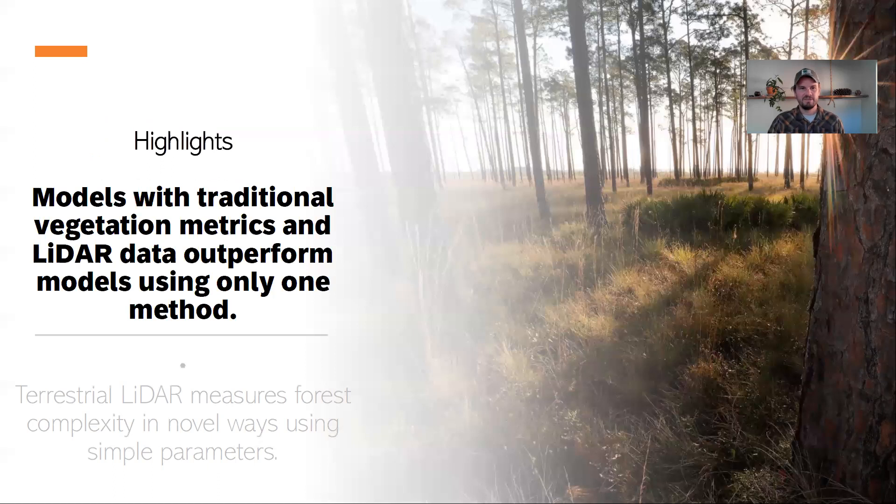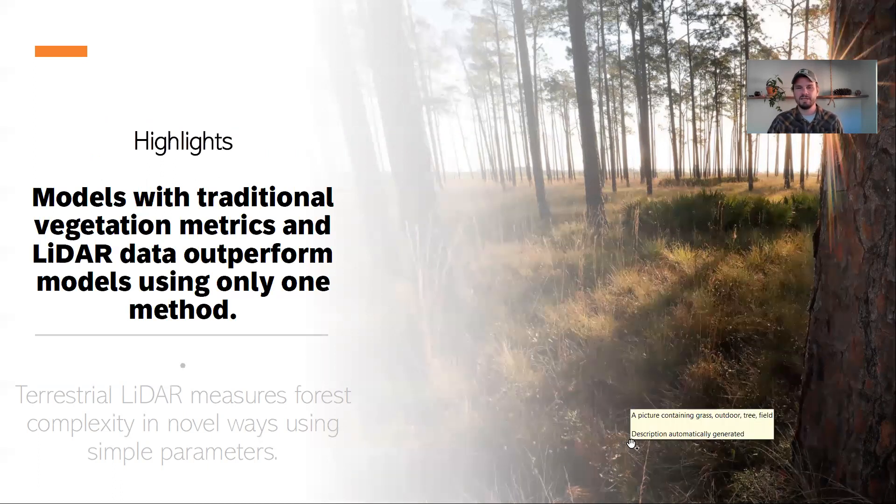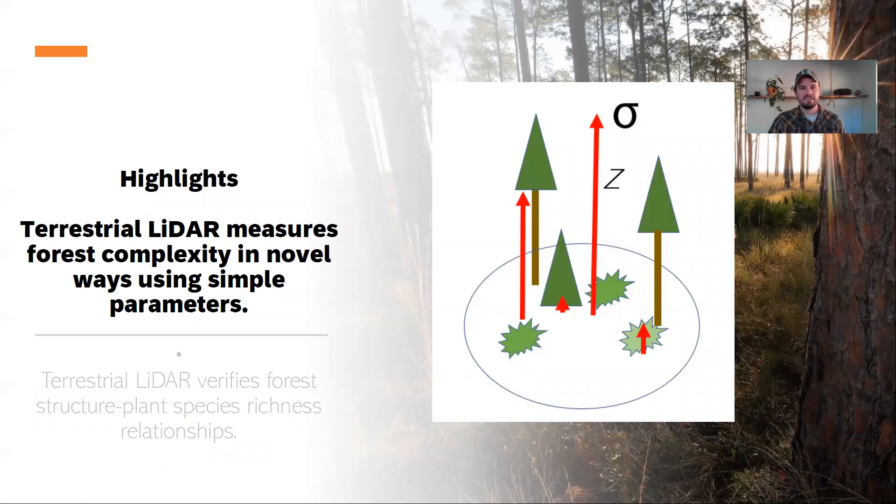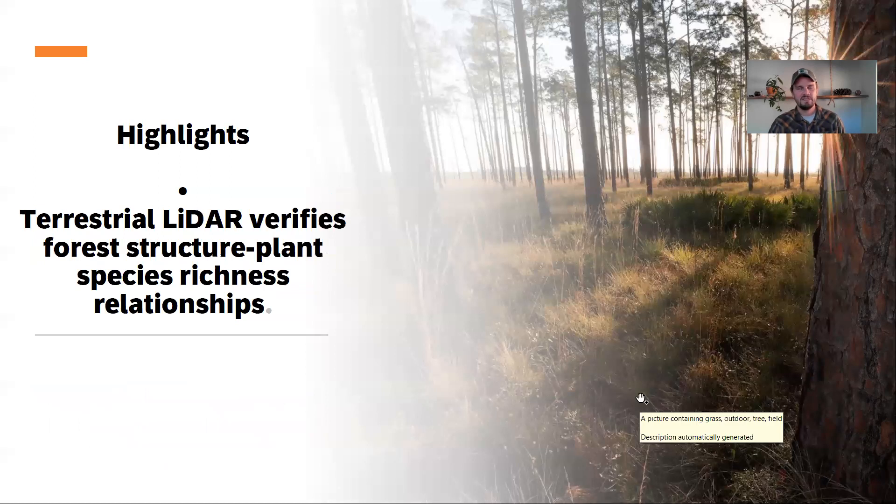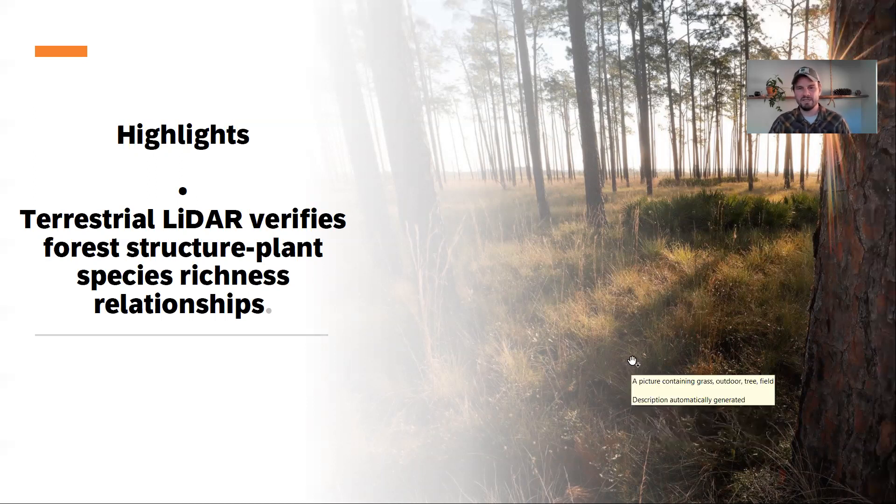So in summary, richness models with a combination of LiDAR derived variables and traditional metrics outperformed models using only one method in every case. It was really the combination of the two that were most powerful in making the predictions. And the terrestrial LiDAR uses complexity in novel ways with simple parameters. There's lots of great work being done out there with really great algorithms to apply for your TLS data. Here we just used some of the most simple metrics that you can even conduct just on a simple spreadsheet to populate our model. And they were very successful. So to me even shows more power in this—it's a technology that can be used right alongside your normal monitoring, but produce metrics that wouldn't be possible otherwise in a pretty easy and efficient manner.